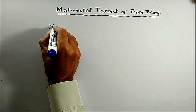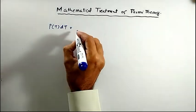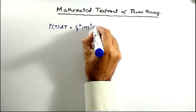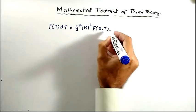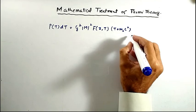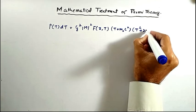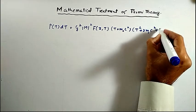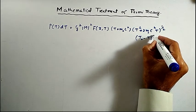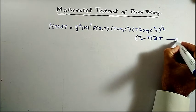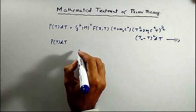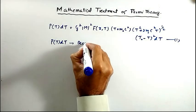We write the decay probability P(T) dt as equal to g² |M|² f(Z,T) into (T + m₀c²) into (T² + 2m₀c²T)^(1/2) into (T₀ − T)² dT. This is Equation 1. Here P(T) dt gives the decay probability of the reaction.